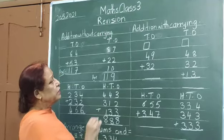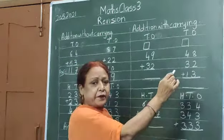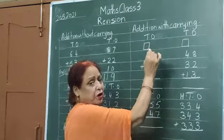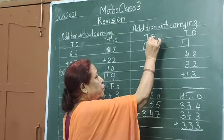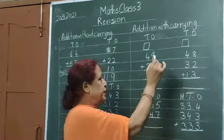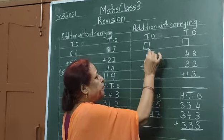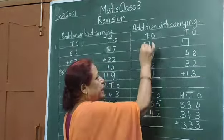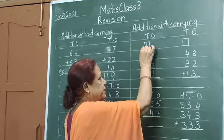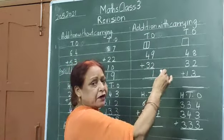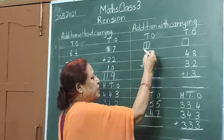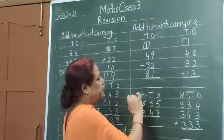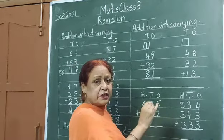Now children, addition with carry. Now we will carry. 1s side and 10s side. 9 plus 2 is 11. Carry over to 10s. Now we will add 3 of them. 4 plus 3 is 7, and 1 is 8. Answer is 81.